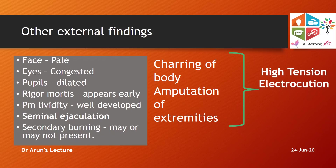Other external findings include: face appears pale, eyes congested, pupils dilated, and rigor mortis appears early. Post-mortem lividity develops over dependent parts. Seminal ejaculation can occur due to contraction of seminal vesicles during current flow. Secondary burns may or may not be present — increased resistance leads to more secondary burns. Charring of the body and amputation of extremities are classically seen in high-tension electrocution injuries.